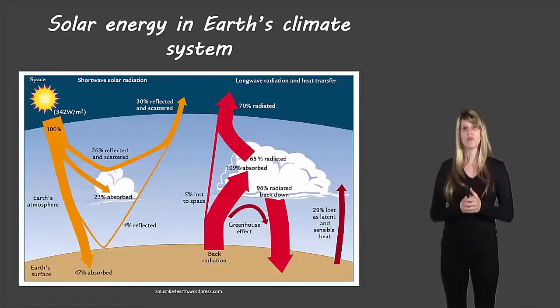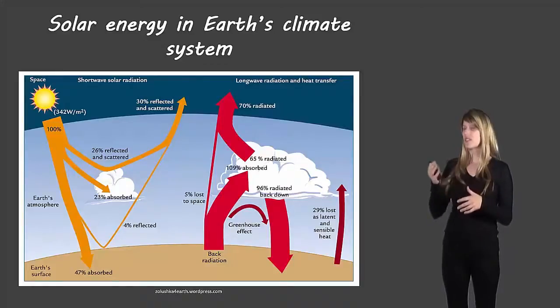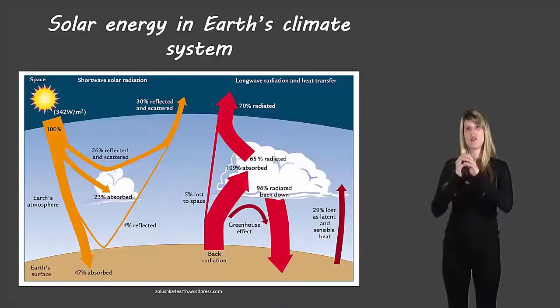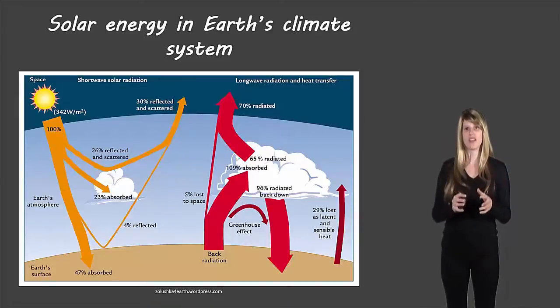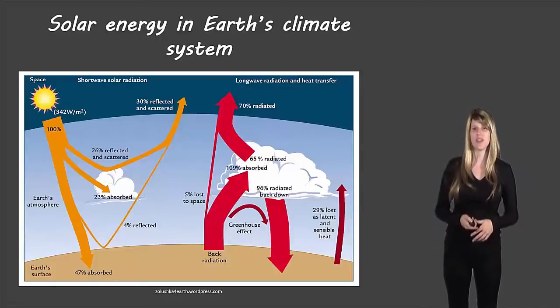So there are different situations for what can happen with the sunlight and we'll see based on what sort of gases are in the atmosphere. Sometimes that can change the percentage of sunlight that's being reflected or absorbed in different areas. When we talk about the greenhouse effect we'll get a little bit more into that sort of scenario.